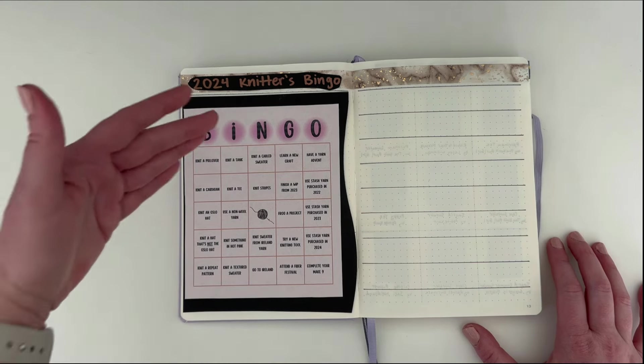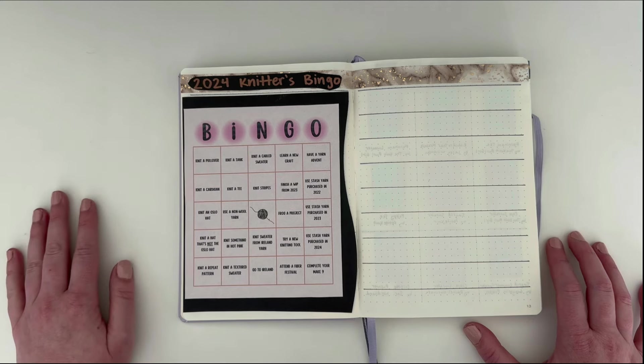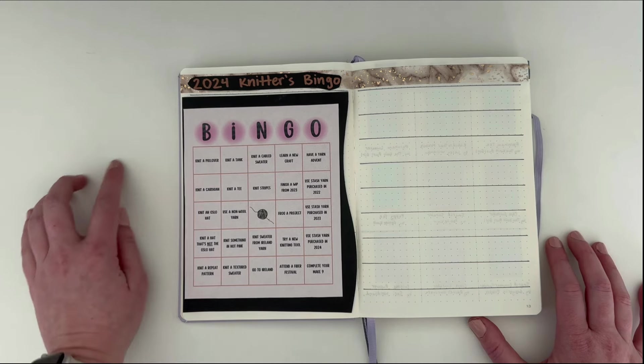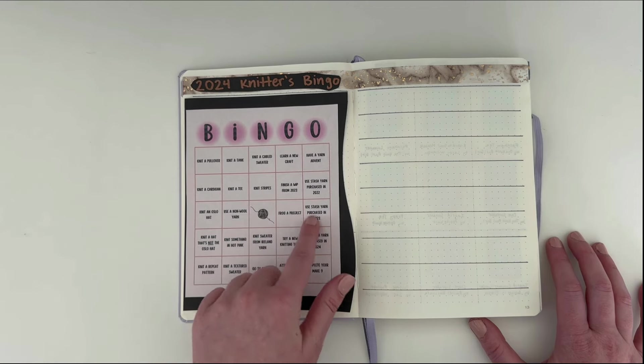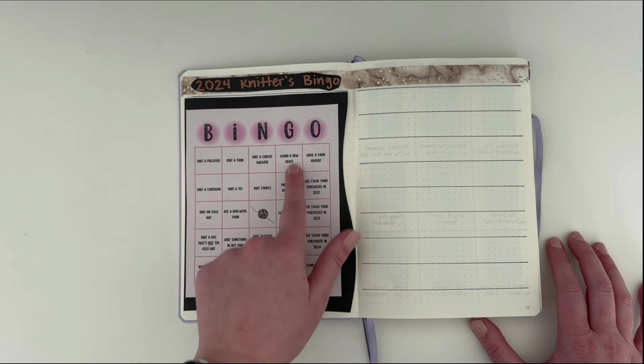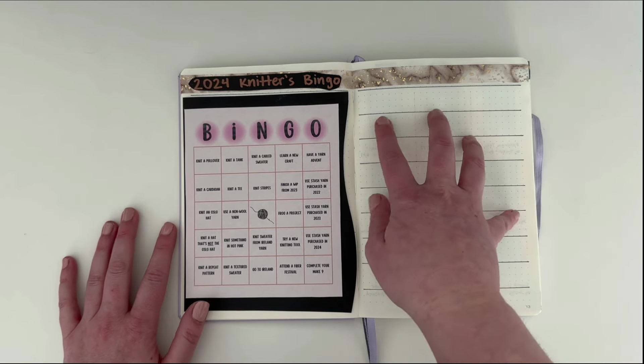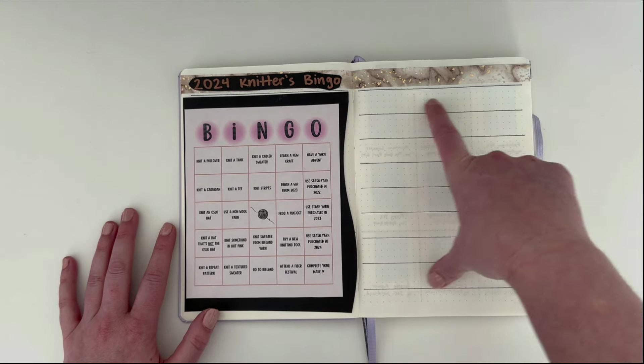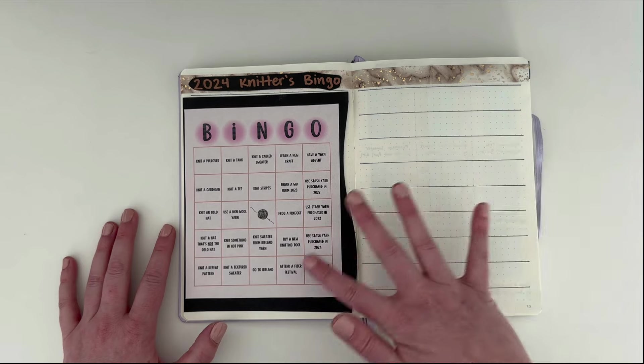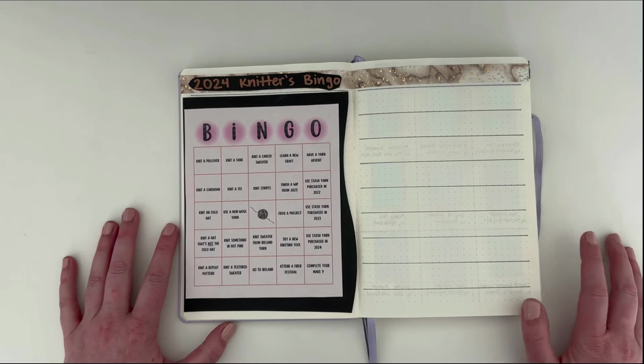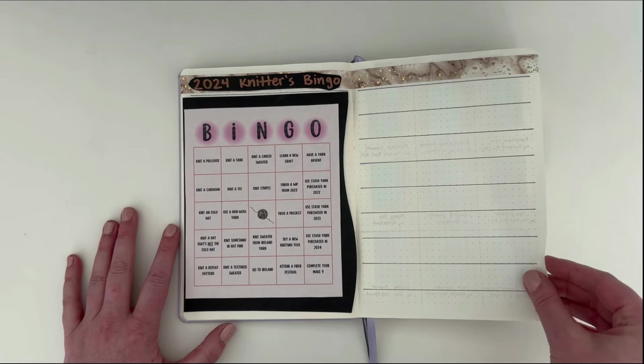I just went on Canva and I created this simple list of knitting related tasks or projects that I will likely finish in 2024. And I made this bingo card. So you can see knit a pullover, knit a cardigan, knit a tee, frog a project, use stash yarn purchased in these different years, learn a new craft, just fun things like this. And every time I complete one of these, I'm going to figure out a way to track them all over here. I've been thinking about printing out another copy of this, so that I can cross them off on one side, but keep one so you can see what each of the boxes are. I haven't figured out how I'm going to track it, but that's going to go here and I'm excited for this. I think it'll be a really fun little challenge throughout the year.